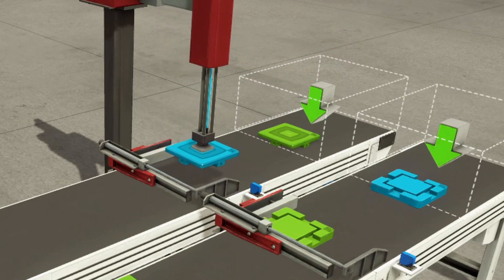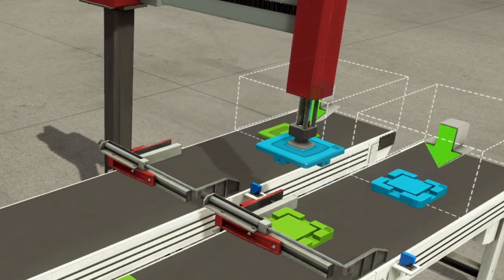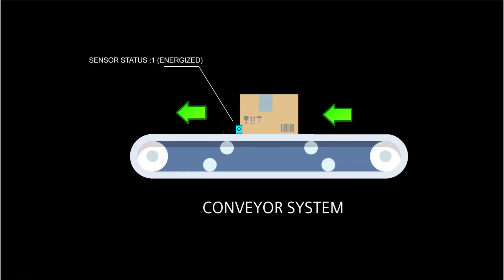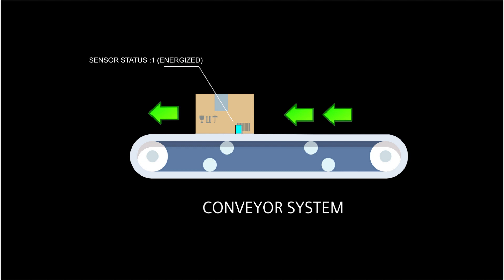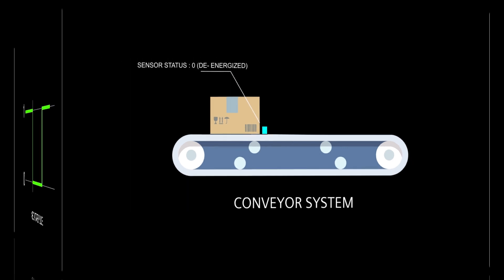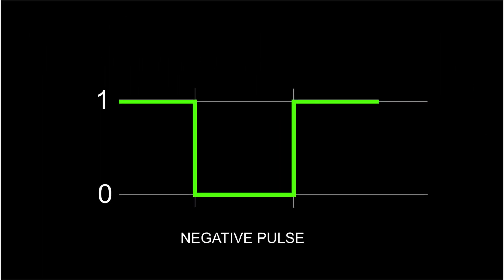In this case, we need a function that responds during a high-to-low transition state. Meaning, after the product energizes the sensor, the conveyor will continue to run until the product totally passes the sensor. What we need here is a negative edge trigger.